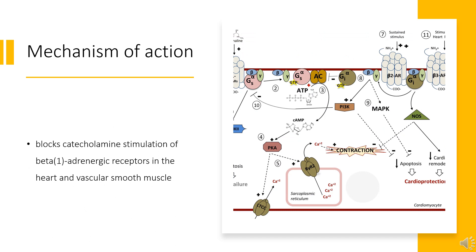Mechanism of Action: Betaxolol selectively blocks catecholamine stimulation of beta-1 adrenergic receptors in the heart and vascular smooth muscle. This results in a reduction of heart rate, cardiac output, systolic and diastolic blood pressure, and possibly reflex orthostatic hypotension. Betaxolol can also competitively block beta-2 adrenergic responses in the bronchial and vascular smooth muscles, causing bronchospasm.